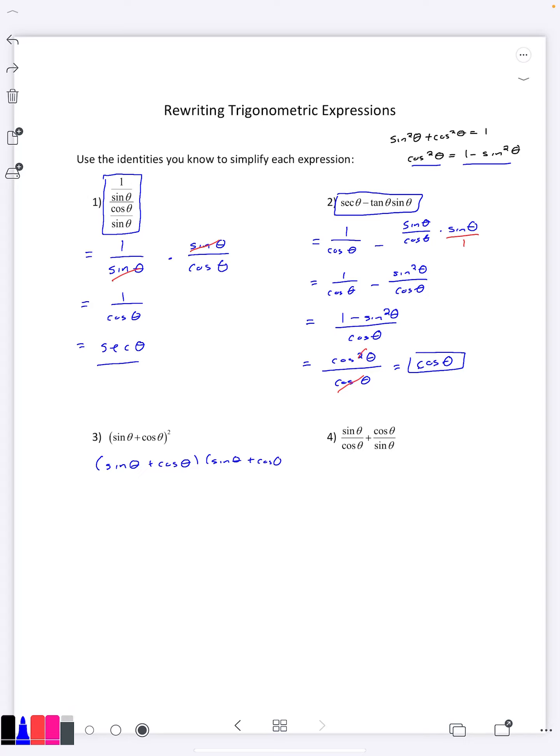It's usually better just to write it out. So then we FOIL it out: sine times sine is sine squared.